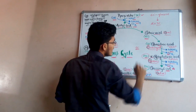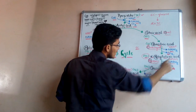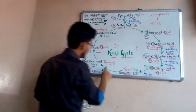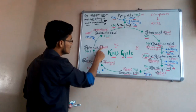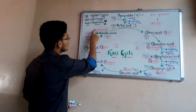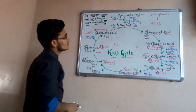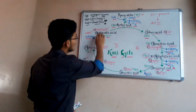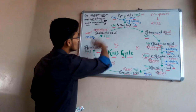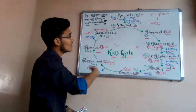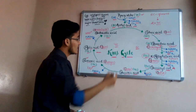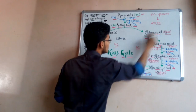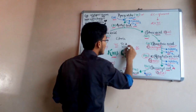I for 'Intelligent' is isocitric acid, K for 'Current' is ketoglutaric acid, S for 'Solve' is succinyl Coenzyme A, S for 'Some' is succinic acid, F for 'Foreign' is fumaric acid, M for 'Mafia' is malic acid, and O for 'Operation' is oxaloacetic acid. This cycle is also known as the citric acid cycle, as it starts with citric acid, as well as the TCA cycle — tricarboxylic acid cycle.